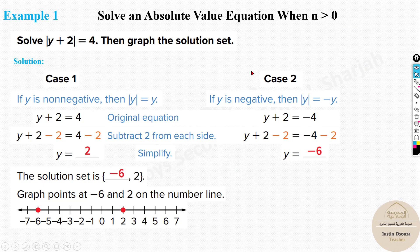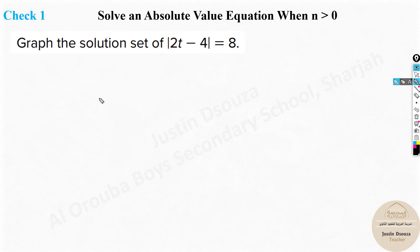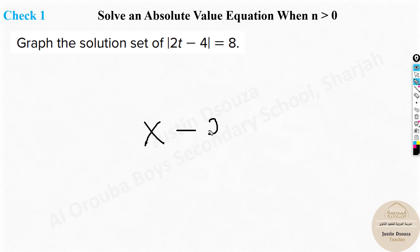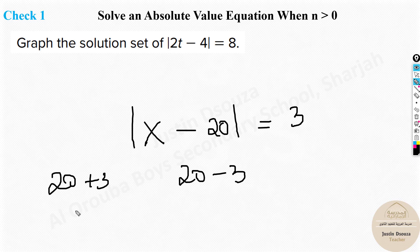Now let's look at a real-world problem to understand better. Imagine you have some coins — you don't know exactly how many, but you can see them and estimate around 20 coins, give or take 3 coins. It might be more than 20 or less than 20. So you're saying it could be 23 or 17. Writing this as an equation: the absolute value of X minus 20 equals 3, since the value is around 20 but the variation is 3.